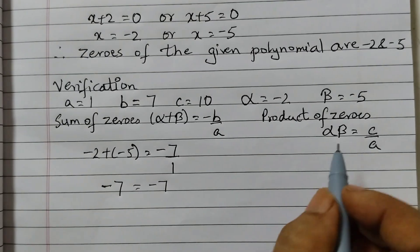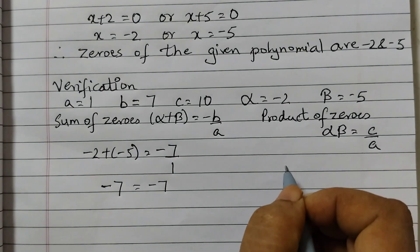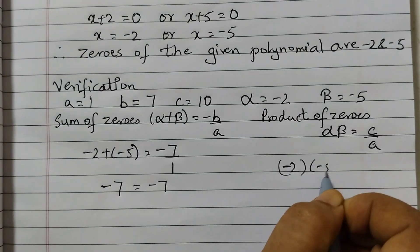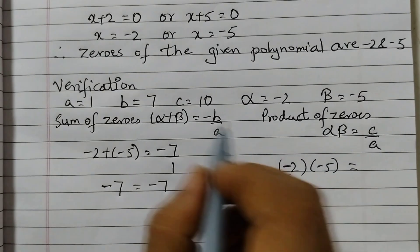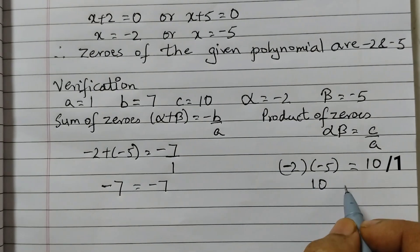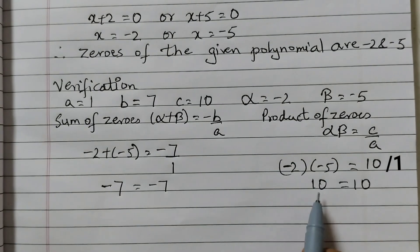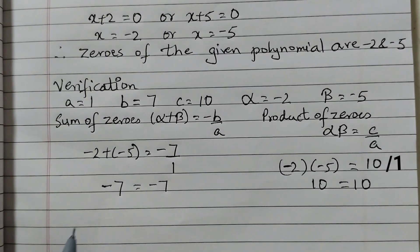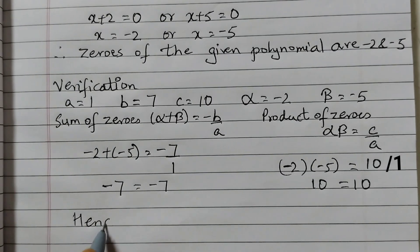Now for the product of zeros alpha into beta minus 2 into minus 5 is equal to C by A, that is 10. So minus 2 into minus 5 is 10 because minus minus becomes plus is equal to 10. So here also left hand side is equal to right hand side. So we can say hence verified.